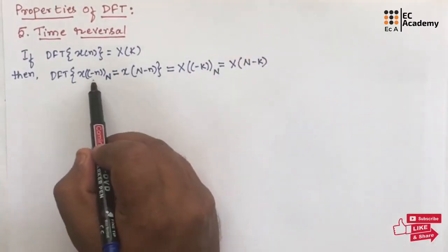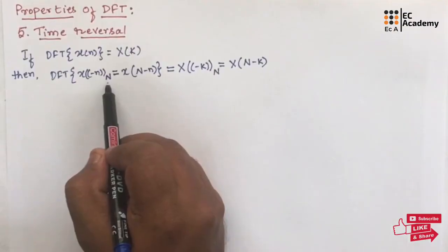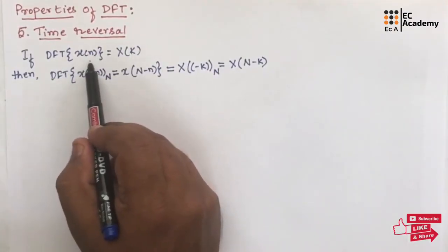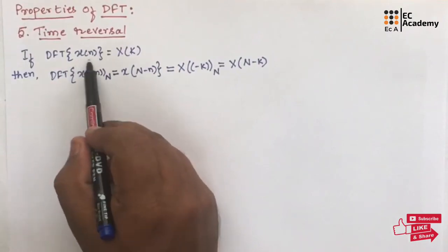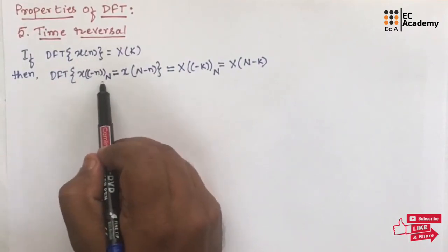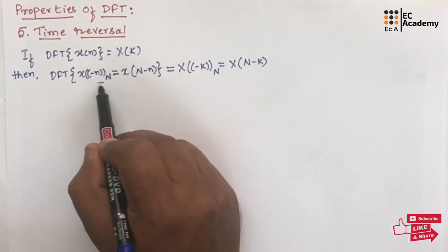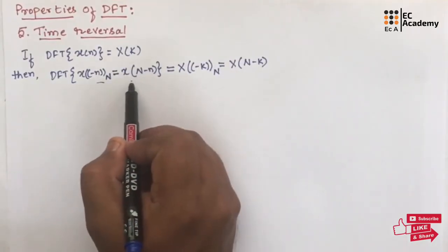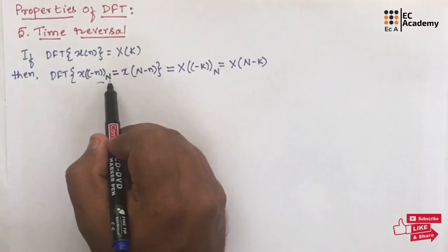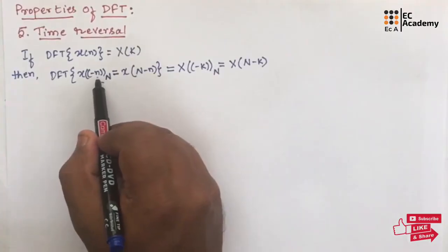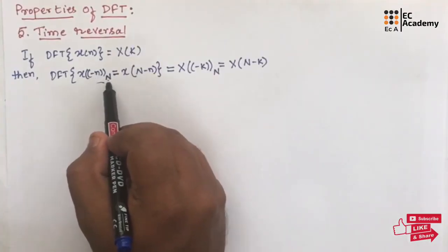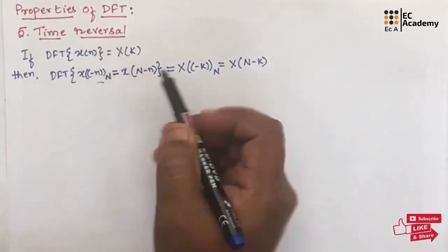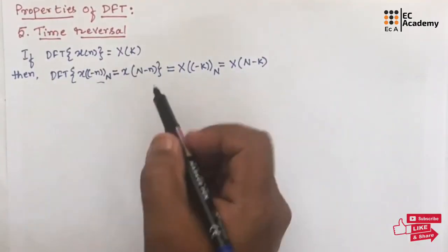Here, x(-n mod N) represents the time reversal of x(n). The time reversal operation of x(n) can be represented like this, and we can write this as x(N-n). This we understood in our previous topic, where we can add the mod value with the n value, so it will be N-n. That is what we have written here.